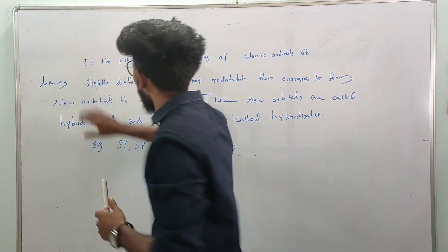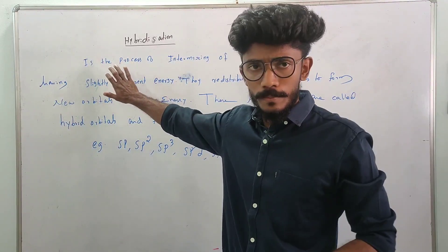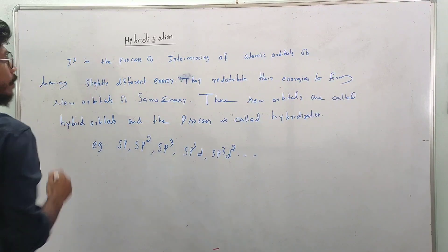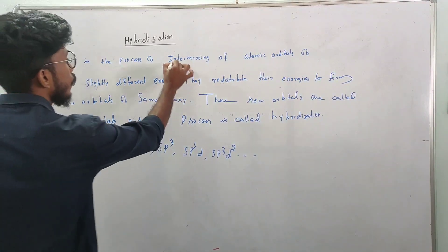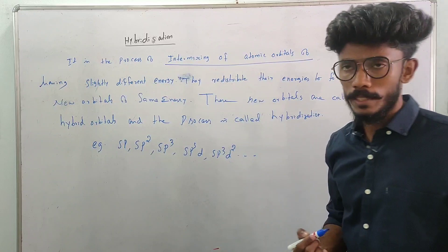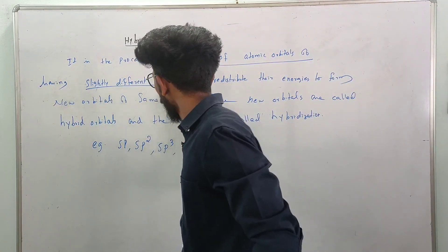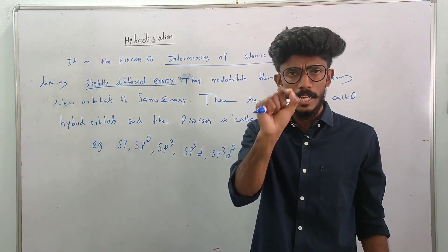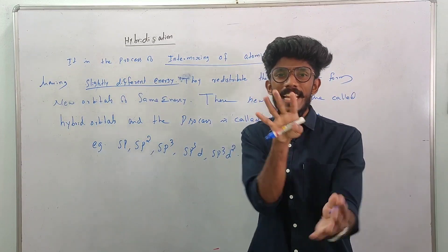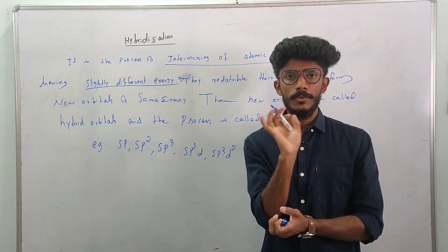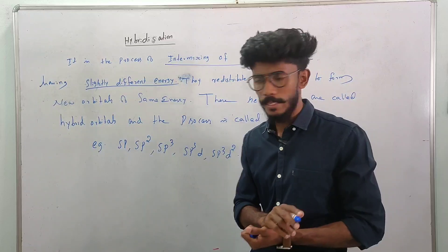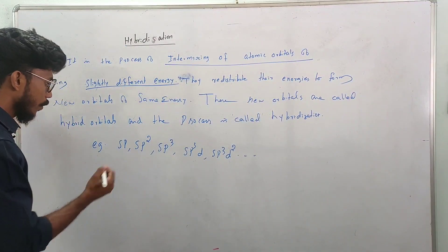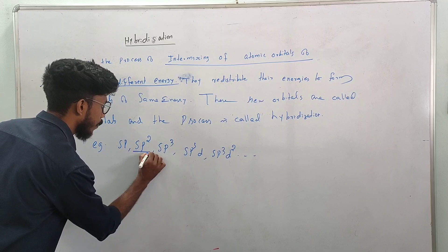Hybridization is the process of intermixing of atomic orbitals having slightly different energy — to offset atomic orbitals with atomic orbitals. Now let me explain. How do we prepare this? What is sp2?